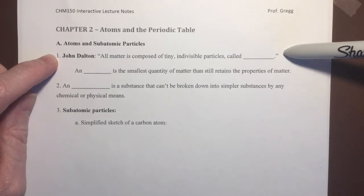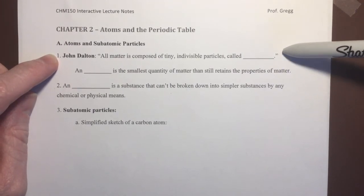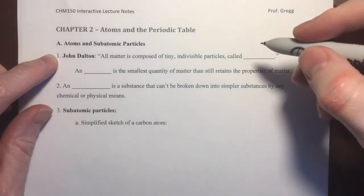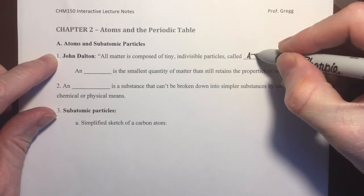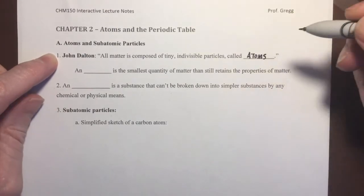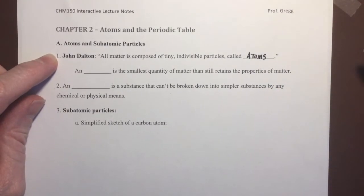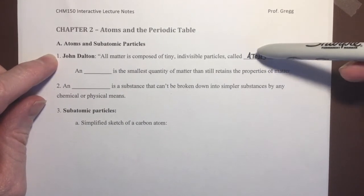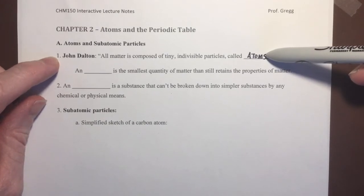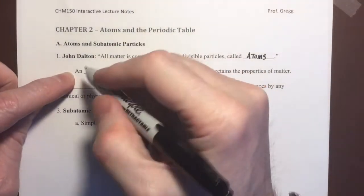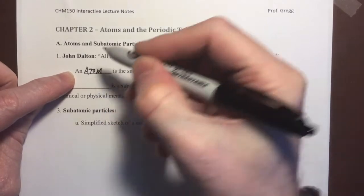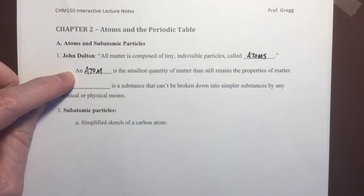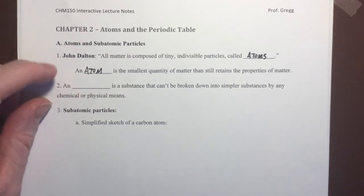The fundamental statement of his model was that all matter is composed of tiny, indivisible particles called atoms. As a nod to the ancient Greek philosophers who first proposed this concept, he chose their name for them. Atomos in Greek means not divisible. Just to reiterate, an atom is the smallest quantity of matter that still retains the properties of matter.